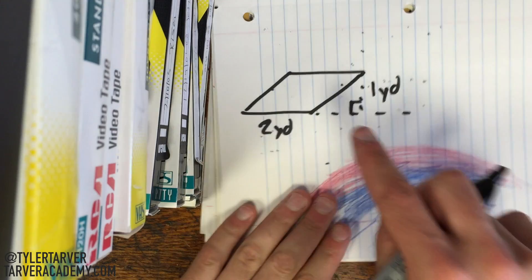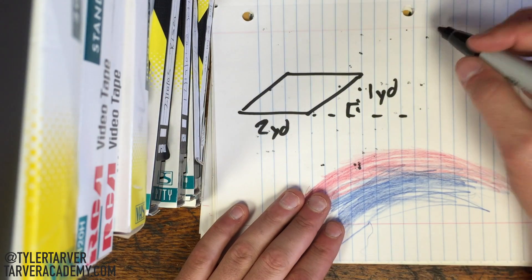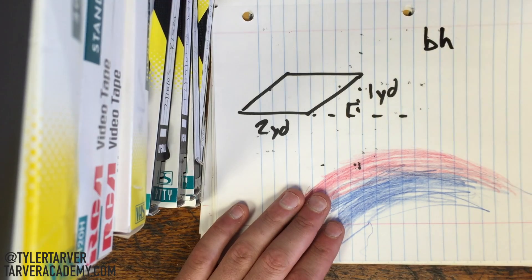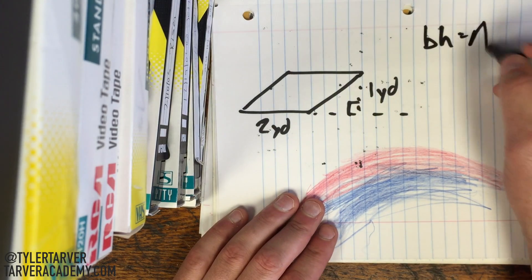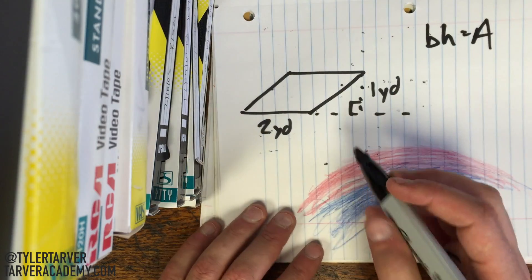All right, so whenever we look at this problem, first we need to know the formula for area of a parallelogram. Base times height. That's pretty much it, okay? Here's the trick, okay? For the base, you can use any side length, okay?